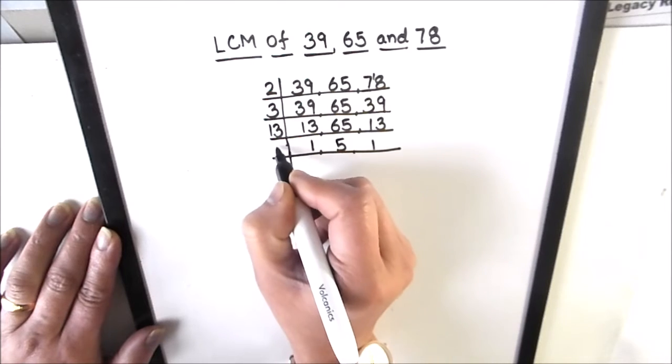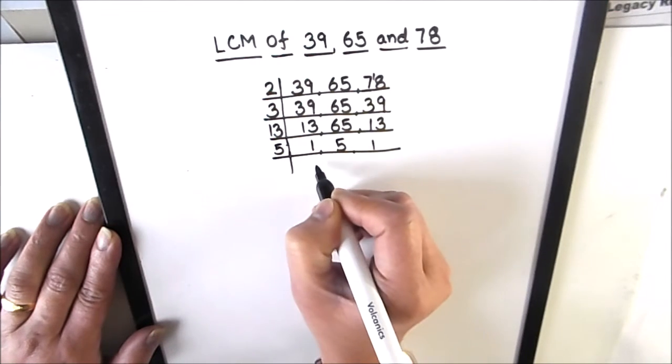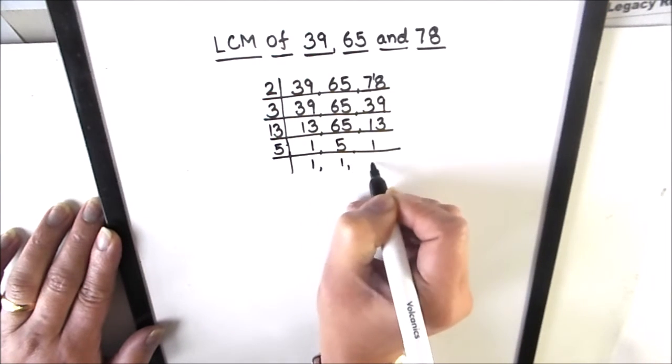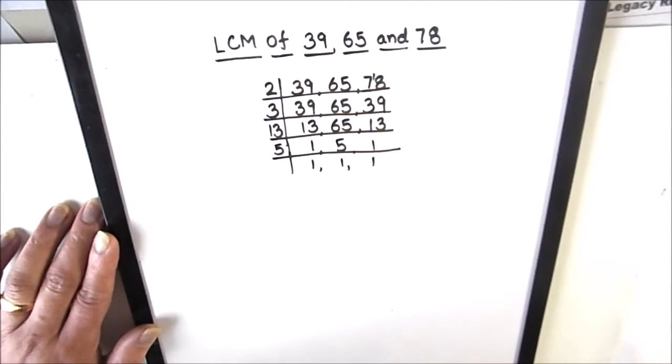Number 5 is a prime number, so it is only divisible by number 5. 5 times 1 is 5. Now all the numbers are fully divided.